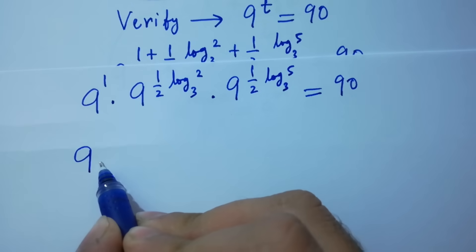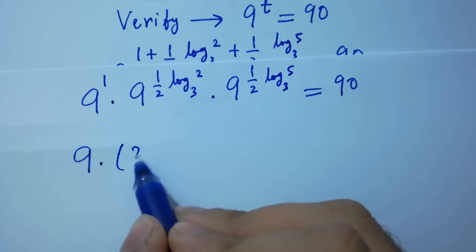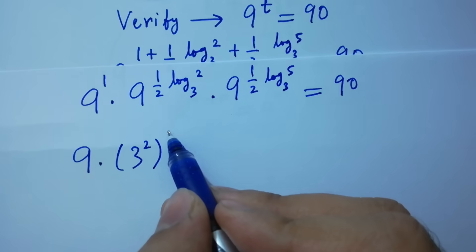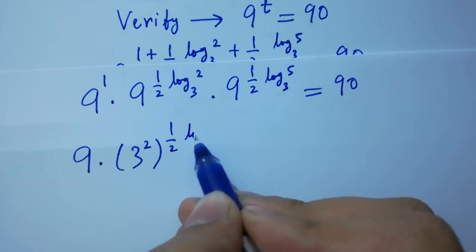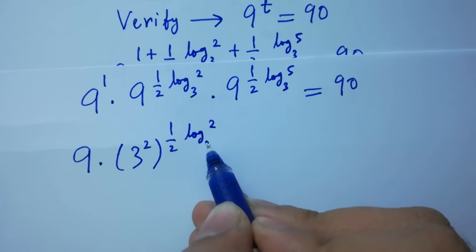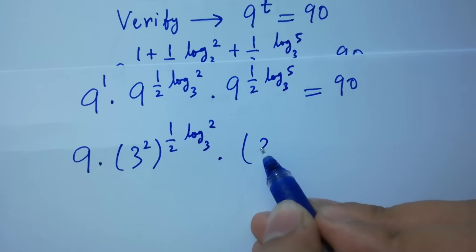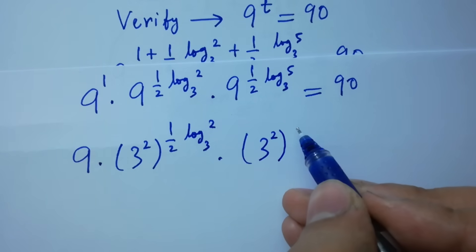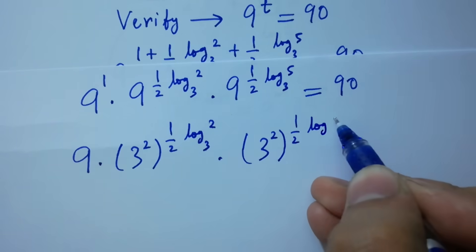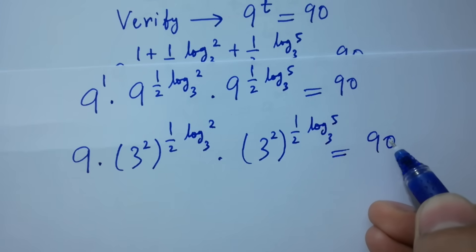We write 9 as 3 squared. So we have 9, times 3 squared to the power one-half log 2 to the base 3, times 3 squared to the power one-half log 5 to the base 3, equals 90.